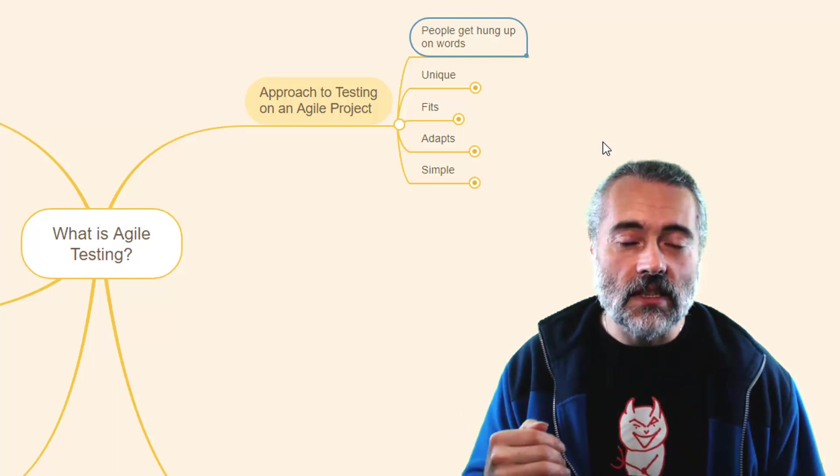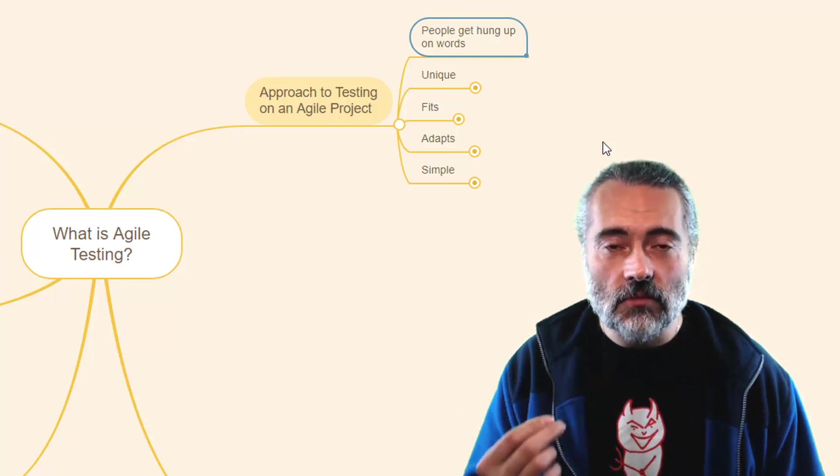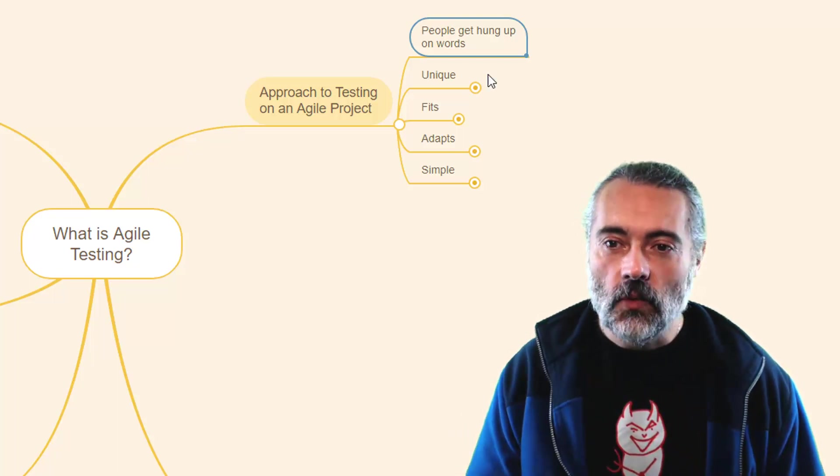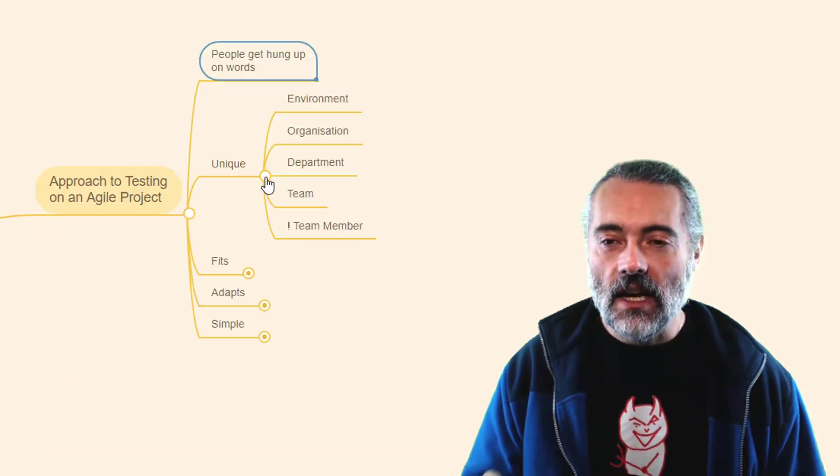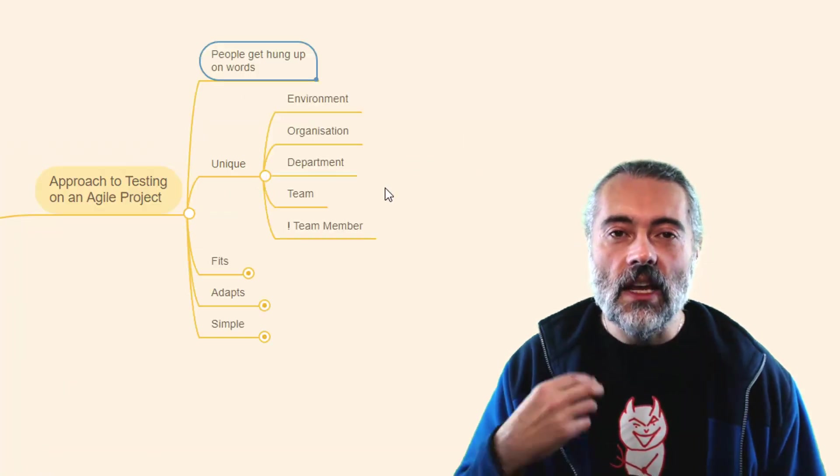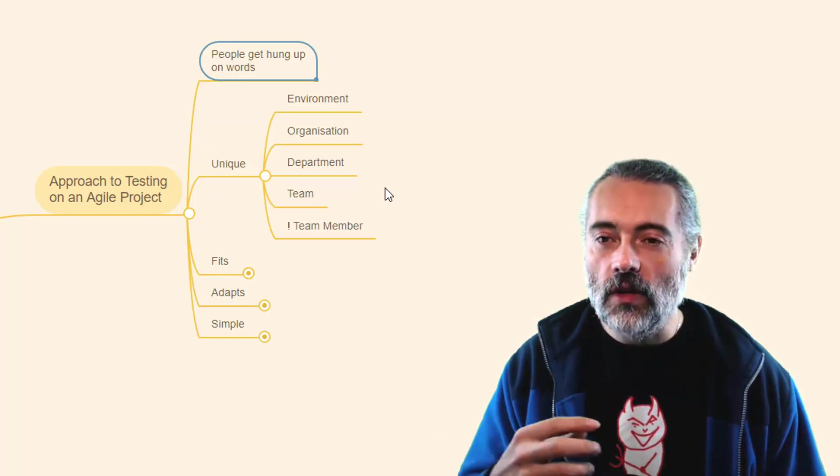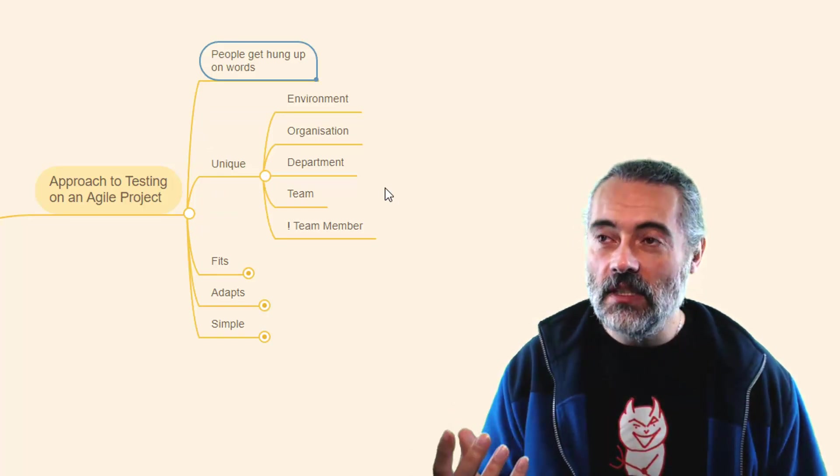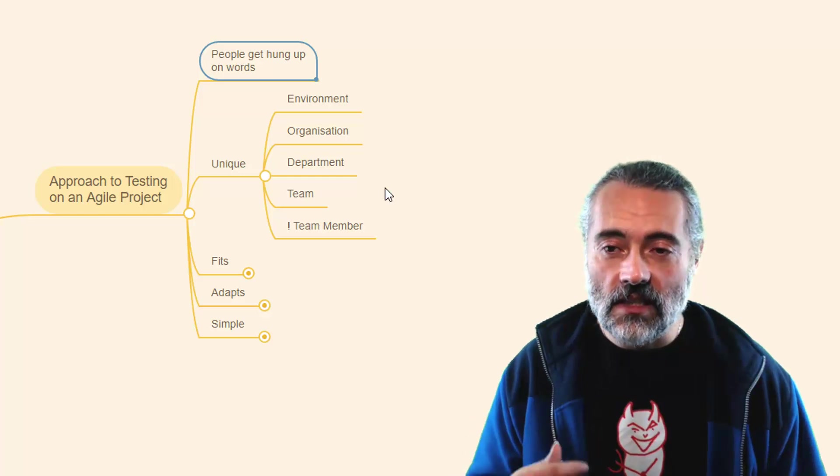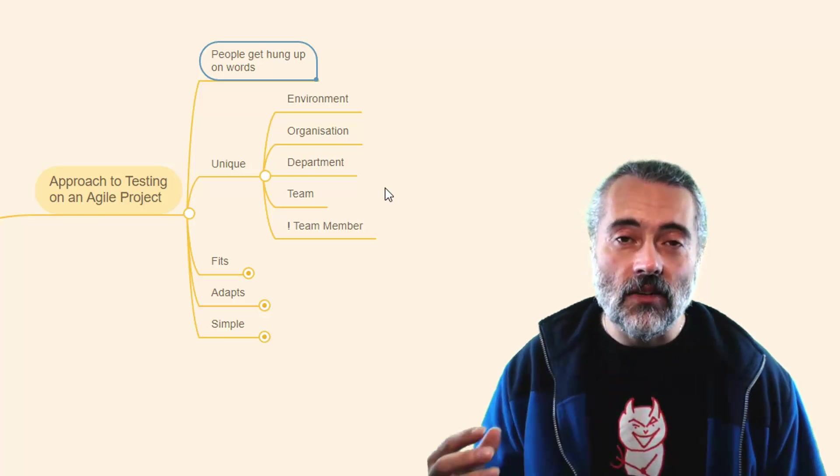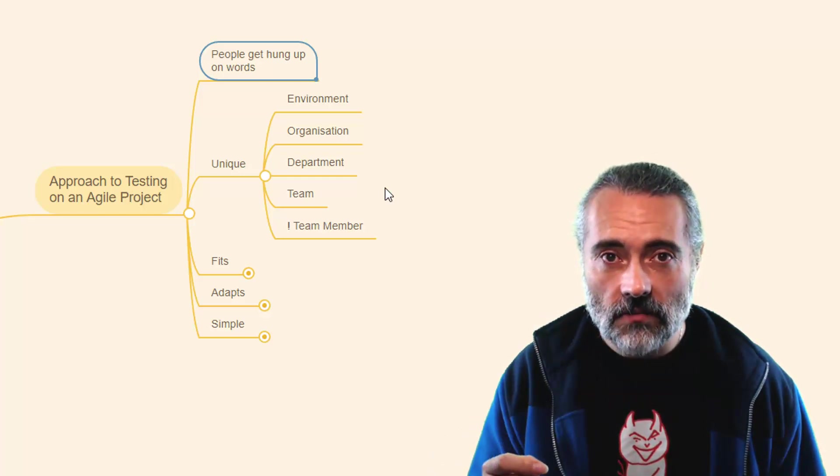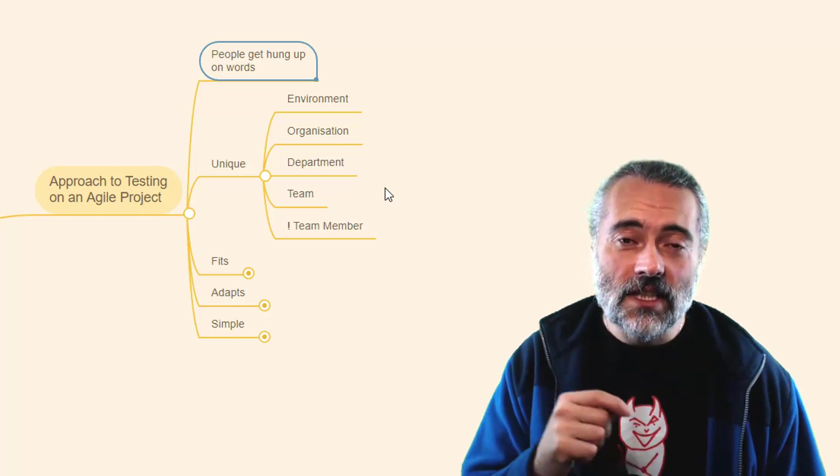We're going to prioritize some functionality above other functionality. And the test approach has to compensate for that, which makes it unique. And it's unique for the environment that we're working in, the particular company or the organization. And it might be different in each department in that organization. And it might be different in each team in that organization. And sometimes it's different for each team member.